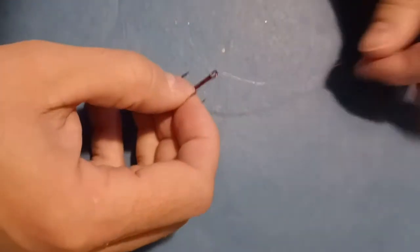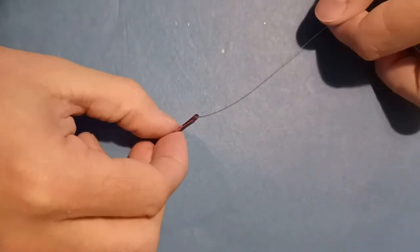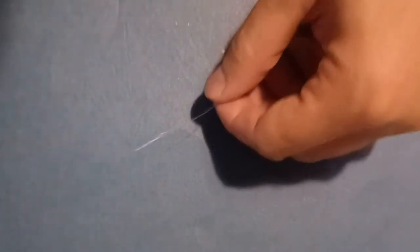So there I wetten the knot a little bit, tighten it up, and then here I'm simply cutting off the tag end. And so there you have the first component.